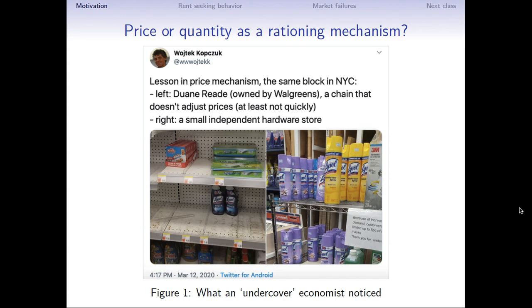One store in which he sees the shelves empty and another in which they're fully stocked. The Duane Reade on the left adjusts prices only slowly. There could be frictions in price adjustments. And on the right, you have the picture in a small independent store where prices have gone up and there's also a certain amount of quantity rationing going on as well. And the shelves are there. So what's going on in these markets?